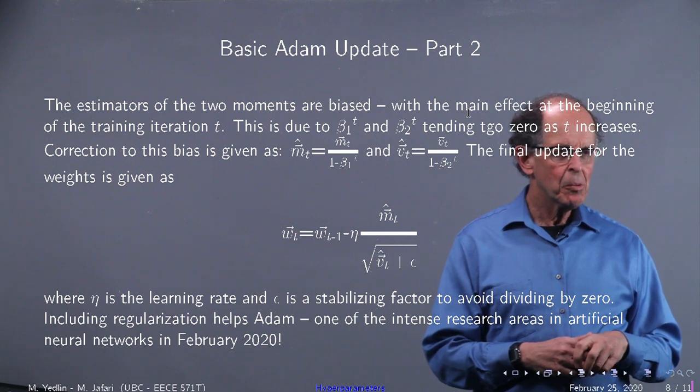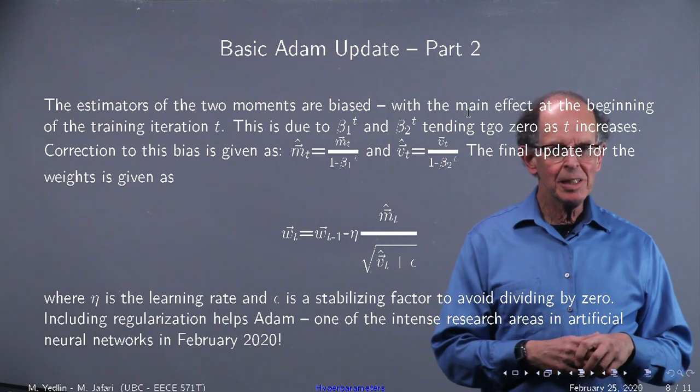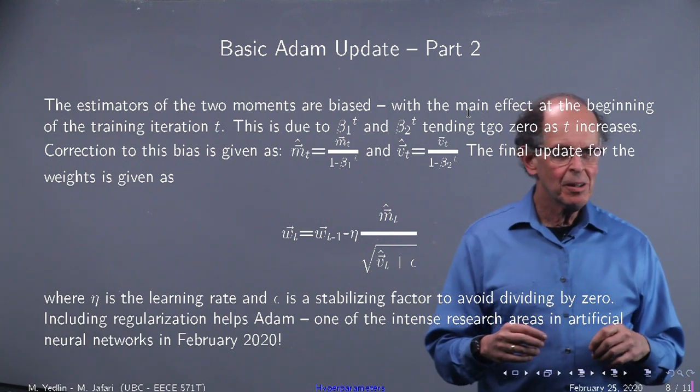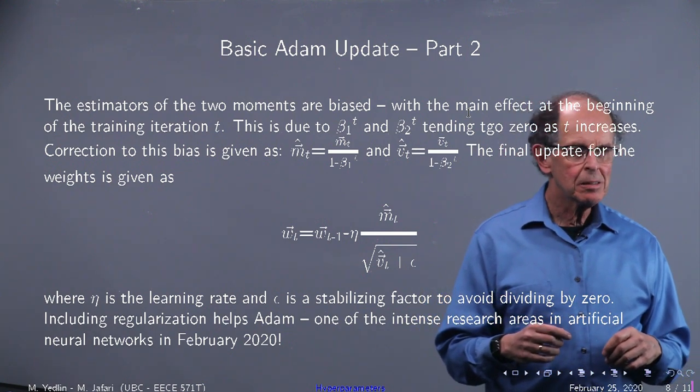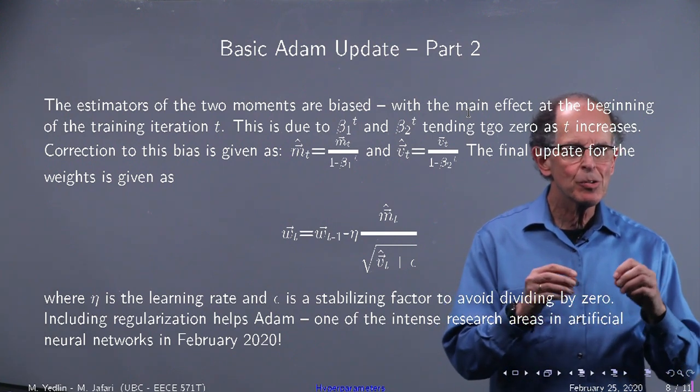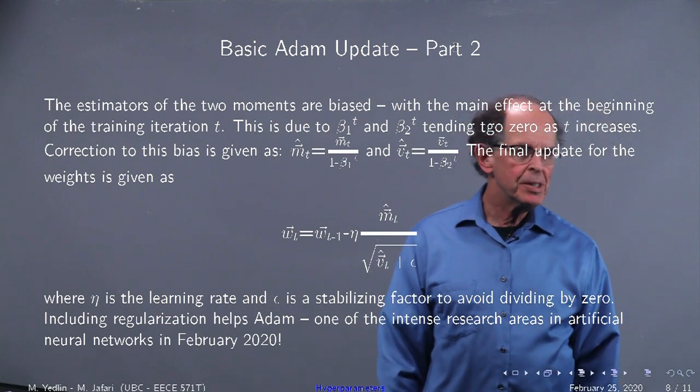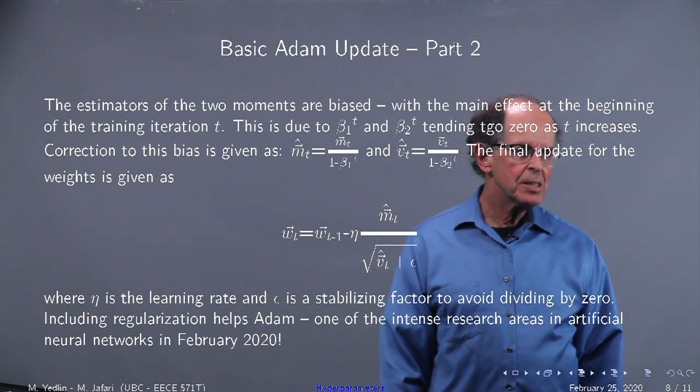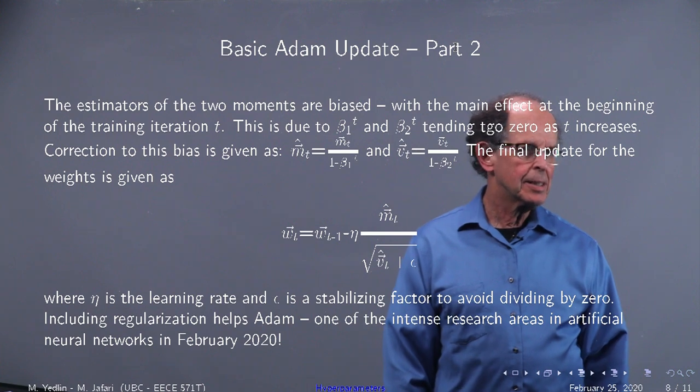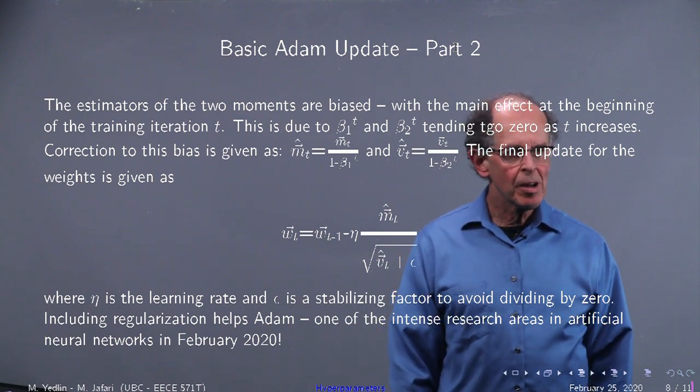If you look at the update formula it has the learning rate there. Where's the gradient? Well that's m. It's a moving average of the gradient so it's a smoothed out gradient. What about square root of vt? Vt has the gradient squared so it's positive.